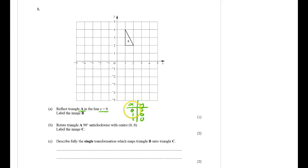x is 2, y is 0. So I get 0, 0, 1, 0, 2, 0, 3, 0. That line there is the y equals 0 line.